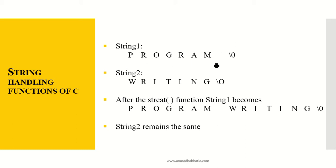Now this is how it will work. Str1 is 'program' ending with slash zero. Str2 is 'writing' ending with slash zero. After the strcat function, str1 becomes 'program writing' ending with slash zero. And str2 remains unchanged.